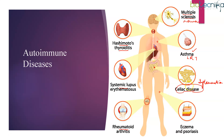Eczema, also known as psoriasis, is a disorder related to the skin. The immune system overreacts to very small irritants or allergens present in the environment, making the skin very sensitive. When it comes in contact with any of these triggers, the immune system treats the small irritant as a foreign invader like bacteria or a virus, activates the body's natural defense system, and leads to inflammation and itching of the skin.